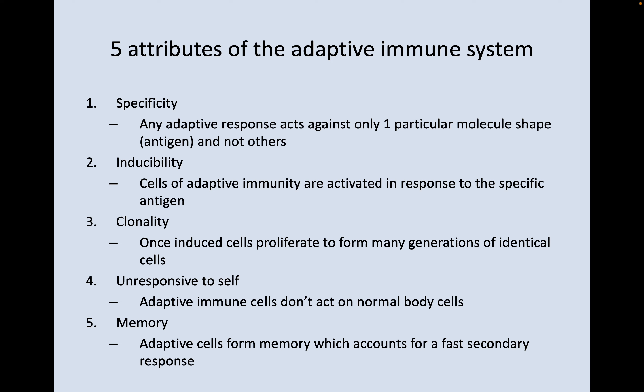Fourth is unresponsive to self — adaptive immune cells don't act on normal body cells, only on that one specific antigen. And fifth is memory: adaptive cells form memory, which accounts for a fast secondary response. So if you ever encounter that same antigen again down the road, your adaptive immune system will remember how to take care of that foe.